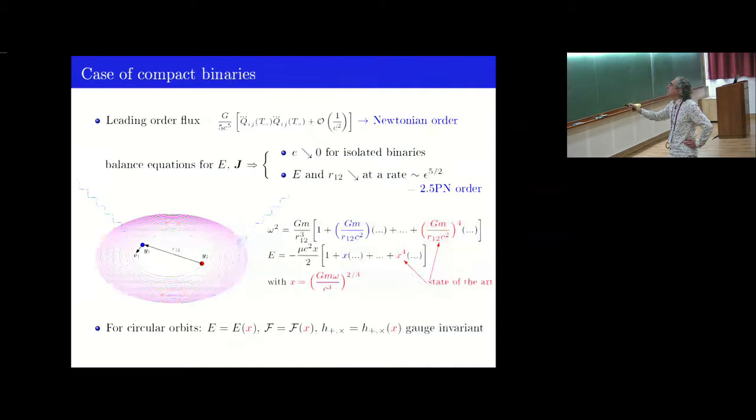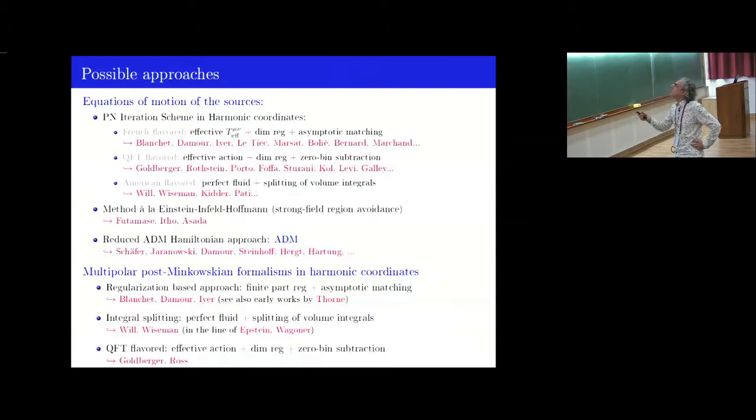So it's convenient since the orbits are quasi-circular to work in terms of the frequency omega. This is the Kepler law. This has many corrections. And the state of the art is that now we know the fourth PN order here. In fact, all the observables related to the local dynamics are known at that order. Notably, the energy with the post-Newtonian correction, where X here is the post-Newtonian parameter related to the frequency omega, omega to the power two-third. And it turns out that for quasi-circular orbits, those quantities, observable quantities—energy, flux, polarizations—have gauge-invariant expressions in terms of X.